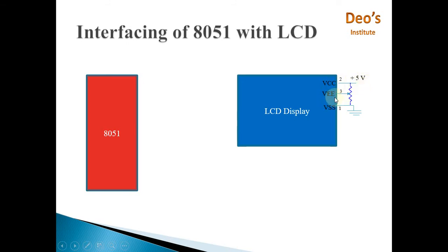Pin number 3 is called VEE. This pin is used to provide power to the backlight. The letters are printed on the screen using that backlight, and VEE is connected through a resistor to the power supply of the LCD.